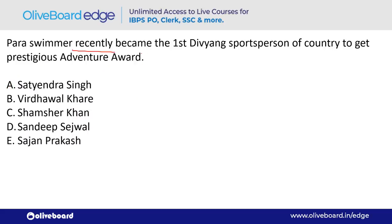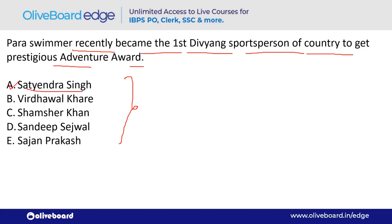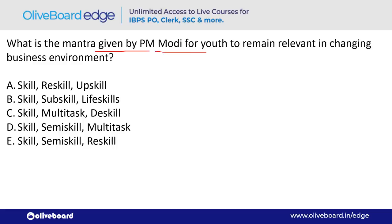A para-swimmer recently became the first Divyang sportsperson in the country to receive a prestigious adventure award. His name is Satyendra Singh — option A.